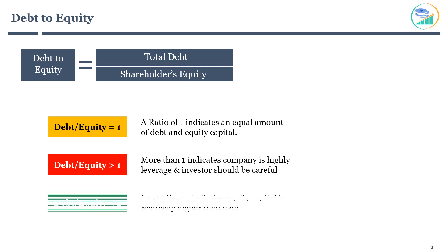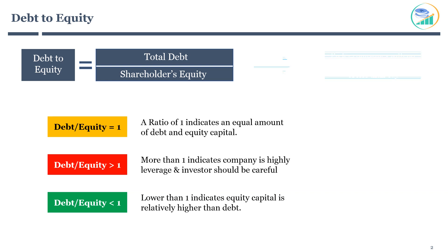Lower than 1 indicates equity capital is relatively higher than debt, and there is a very low risk of not meeting debt obligations. I generally prefer companies with no debt or a debt to equity ratio of less than 0.5.